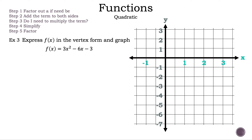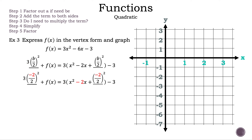Now let's move on to example 3. The steps are: Step 1, factor out a if need be. Step 2, add the term to both sides. Step 3, do I need to multiply the term? Step 4, simplify. Step 5, factor. Express f of x, where f of x is equal to 3x squared minus 6x minus 3, in the vertex form. Now let's convert using complete the square. In this case, a is 3, so we need to factor out the 3 from the first two terms. We add b over 2 squared to both sides. In this case, b is negative 2, because we use the numbers inside the parentheses.